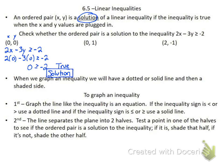The middle ordered pair — same thing, I want to plug it into my inequality: 2x minus 3y is greater than or equal to negative 2. So 2 times 0 minus 3 times 1 is greater than or equal to negative 2. 2 times 0 gives me 0, so I get negative 3 is greater than or equal to negative 2. Is the alligator eating the bigger number? No, so this is false, and so this is not a solution.